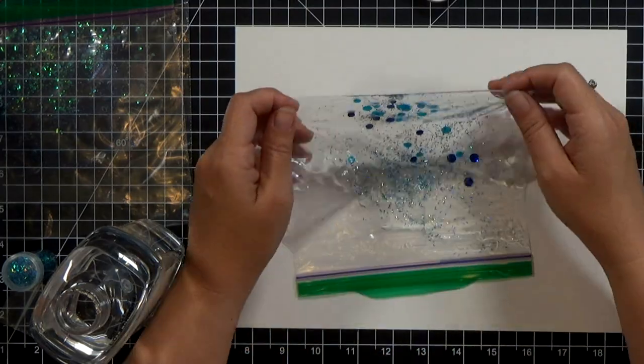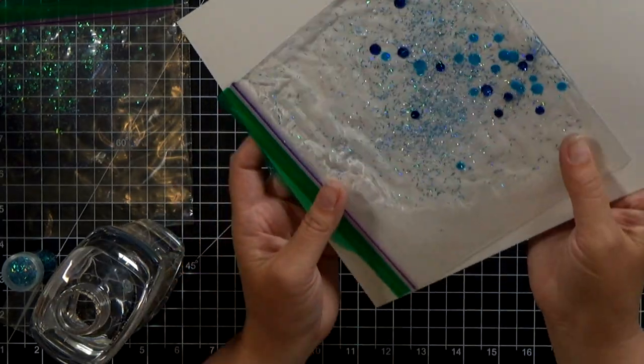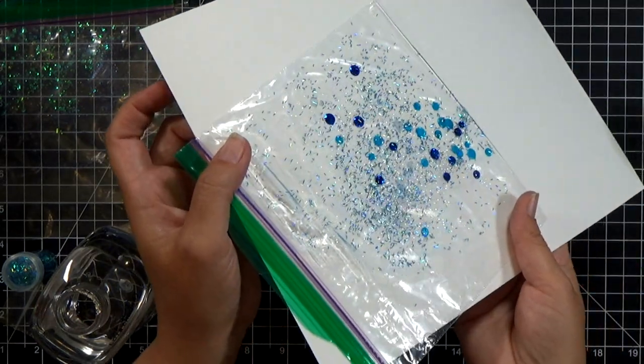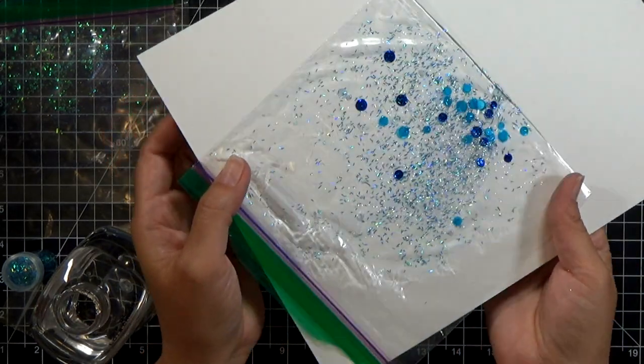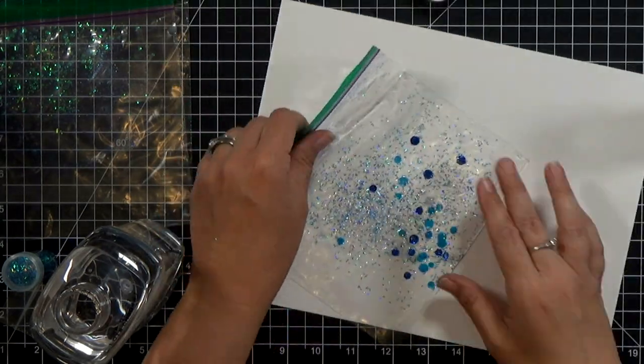And these just mix up really quickly. You can see that you get a good amount of movement. It doesn't move as fast as water. But you definitely get a lot of movement. And you will get settling. So you want to add a little bit more glitter than you would normally for the other two types.